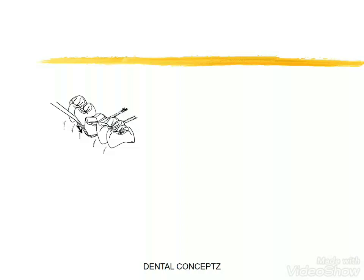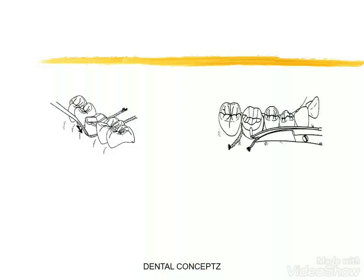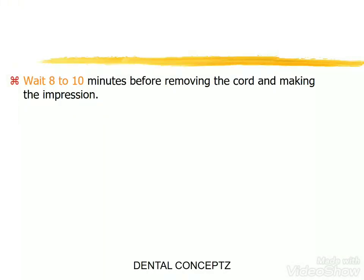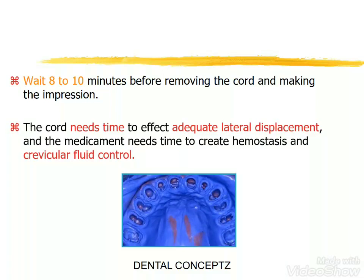The instrument must be angled slightly toward the root to facilitate sub-gingival placement of the cord. After the cord is in place, the tooth preparation is carefully inspected. We then need to wait 8 to 10 minutes before removing the cord and making the impression. The cord needs time to effect adequate lateral displacement, and the medicament needs time to create hemostasis and crevicular fluid control.